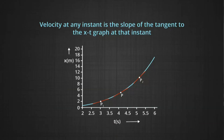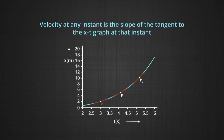Velocity at an instant is the slope of the tangent to the graph at that instant. This tangent continuously changes. If the graph faces upwards, the center of curvature lies above the line, and the slope at different locations increases as we move from P1 toward P2. So the velocity is increasing as we go from P1 to P2 because the slope becomes more and more steep.